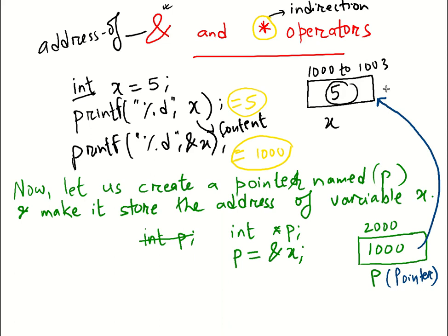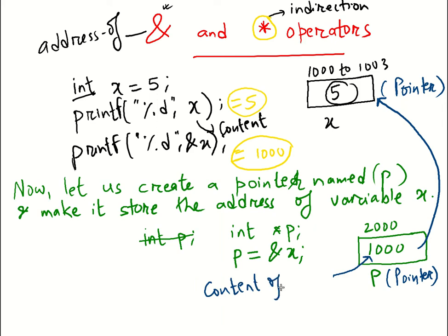So pointer points to a pointee. If you look closely: for a normal variable, the content inside the box is the value. For a pointer, the content inside the box is an address. Always remember — the content of a pointer is an address.